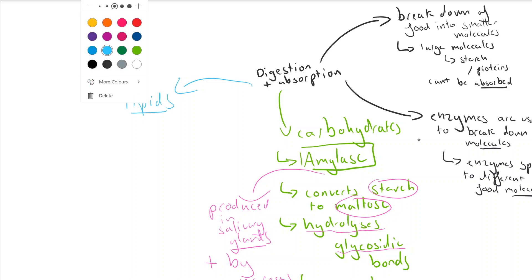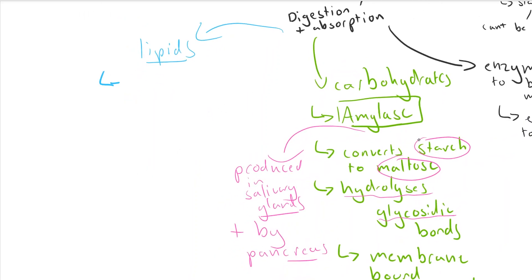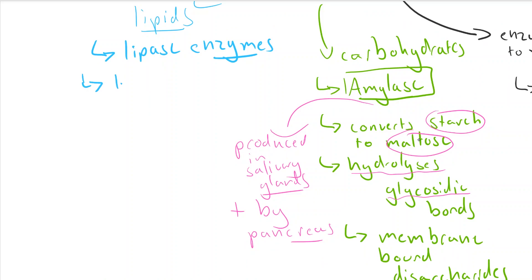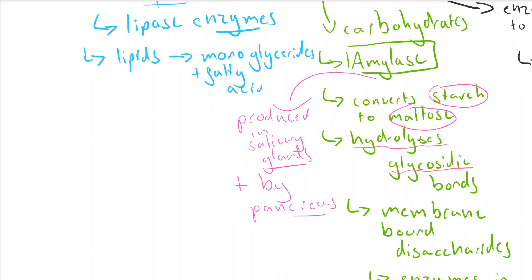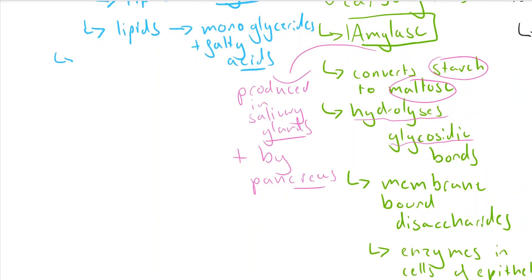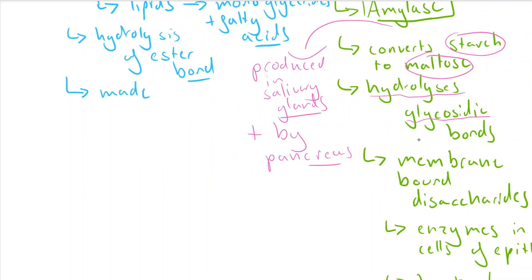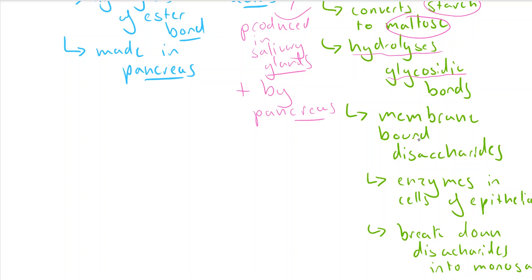Now we're going to look at the next large molecule, which is lipids. These are broken down by lipase enzymes. Lipids break down into monoglycerides and fatty acids, the two parts that they are made out of. To break them down involves hydrolysis, using water, of an ester bond. With carbohydrates, it's glycosidic bonds; with lipids, it's ester bonds. It's important to also know that lipase is made in the pancreas.